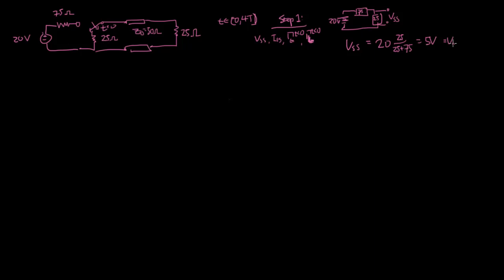That's equal to VN, which is equal to VL. The voltages on both sides, VN and VL, are both the same because everything's at steady state. And ISS is simply VSS divided by RL, which is 5 volts divided by 25, so 0.2 amps.